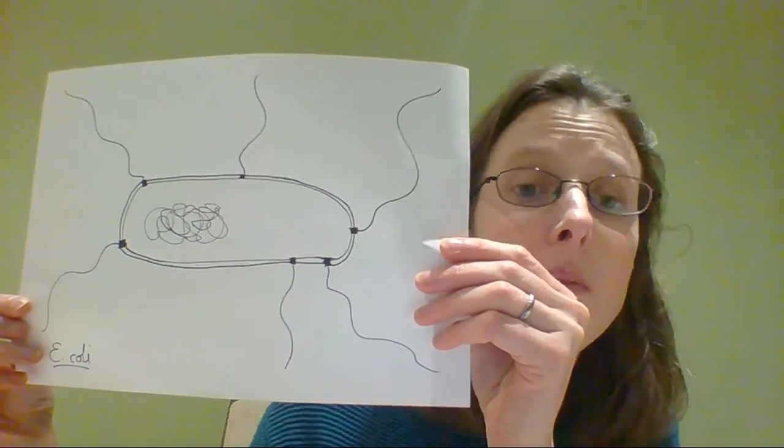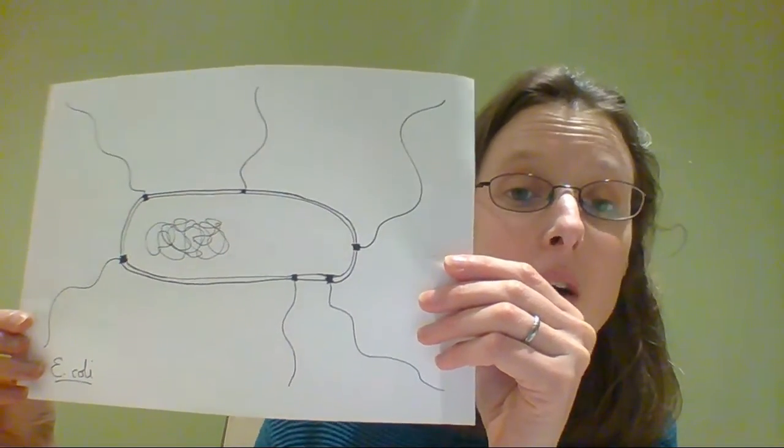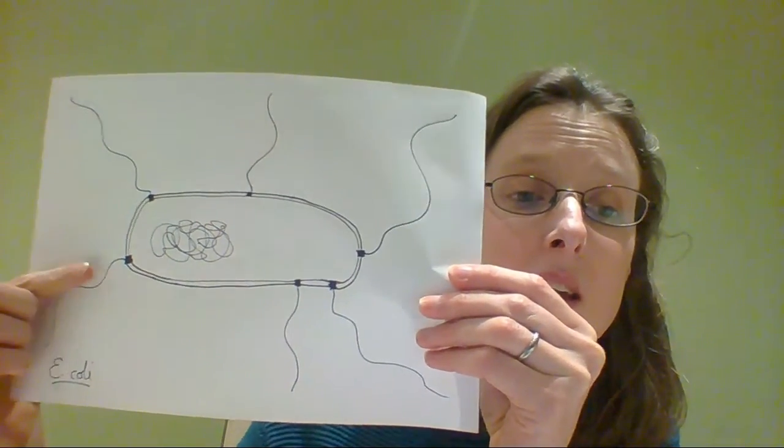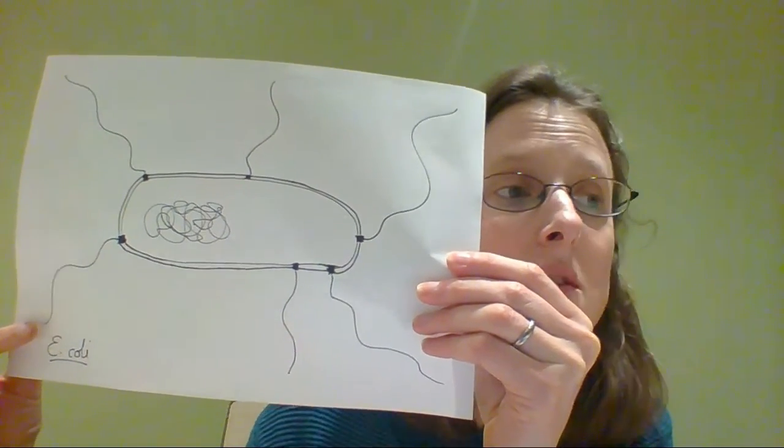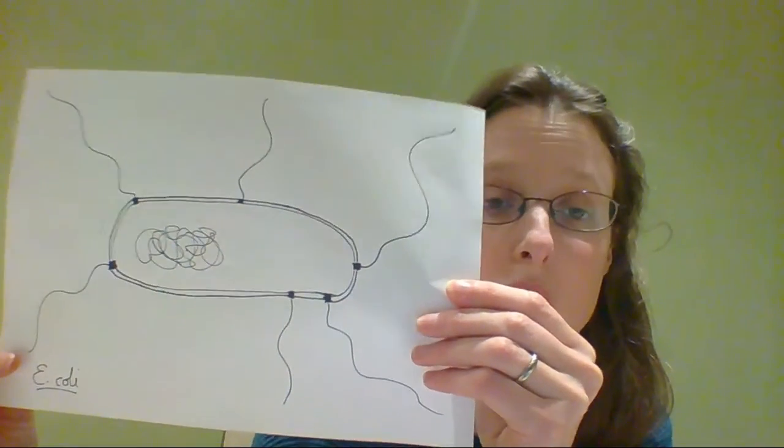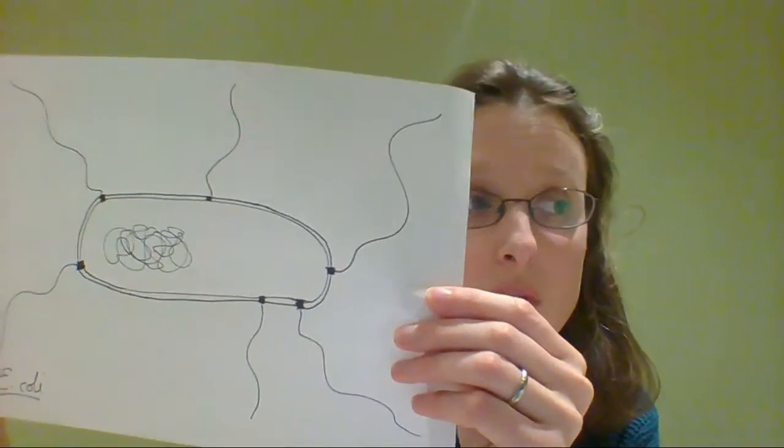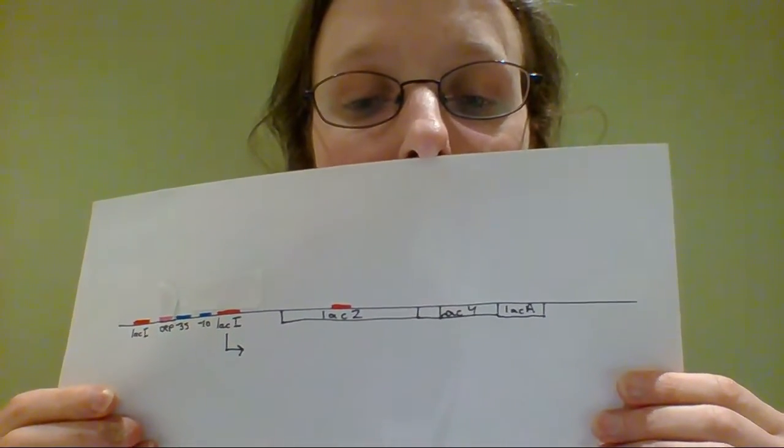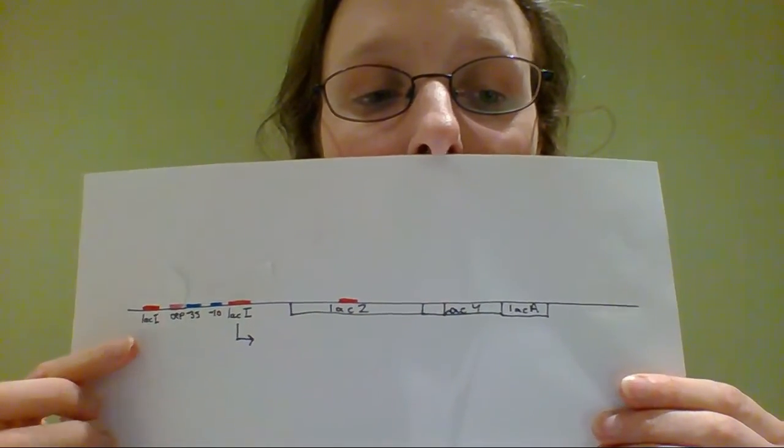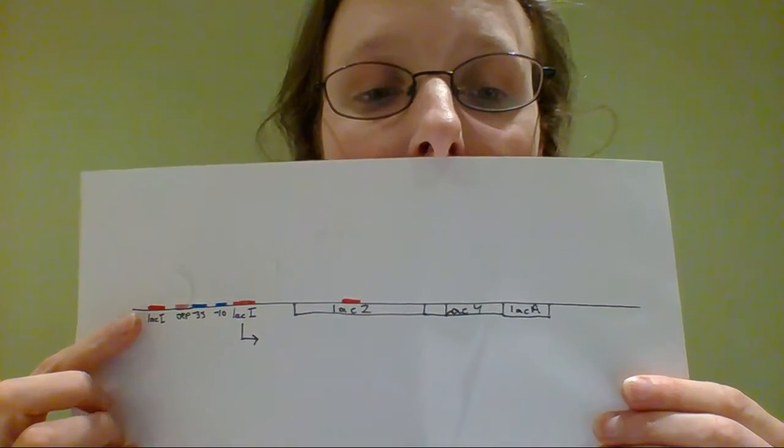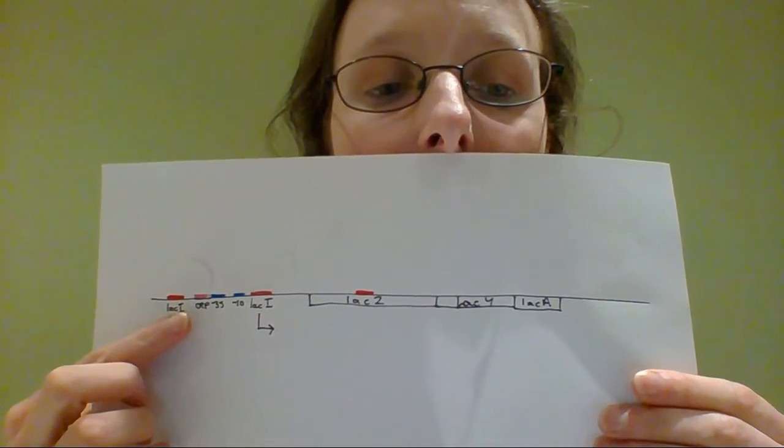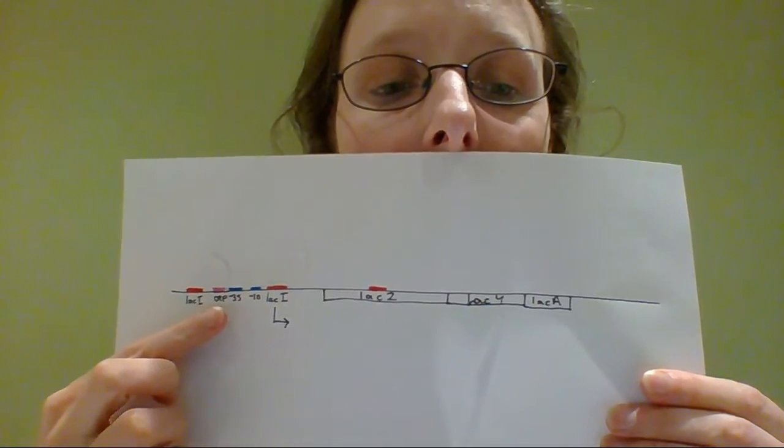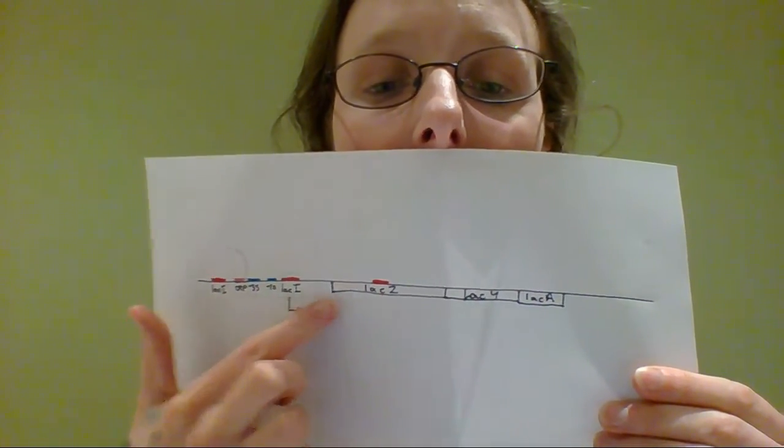Okay, so this E. coli, poor E. coli hasn't got any food, so that is why it is expressing its flagella, so it can swim around and find some food. We've also got inside the bacteria the lac operon. So I've made this probably a little bit too small actually. So can you see, we have got the red lac I, then we've got CRP, the minus 23, the minus 10, another lac I, and then another lac I over here. So these are all the binding sites on the operon.